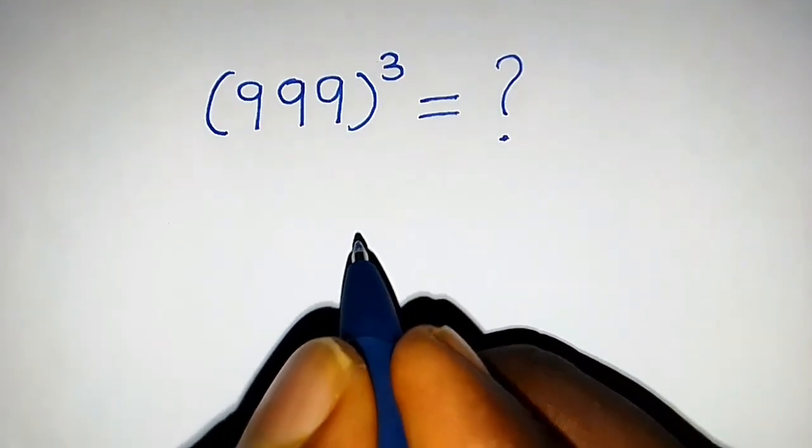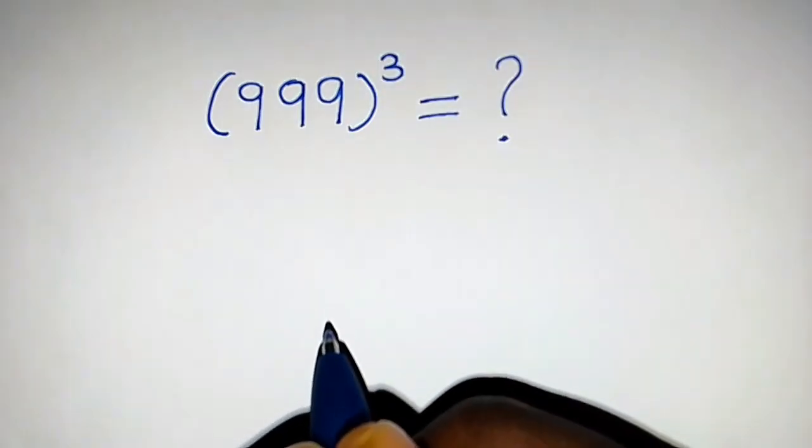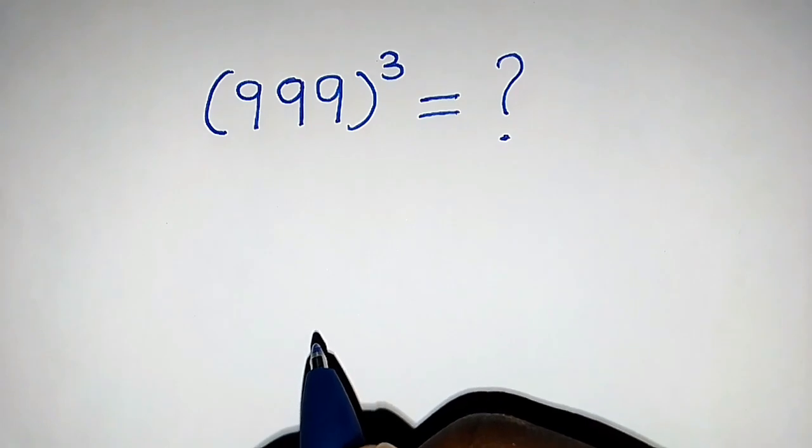Hello. 999 raised to the power 3 is equal to what? How do we solve this without using a calculator?